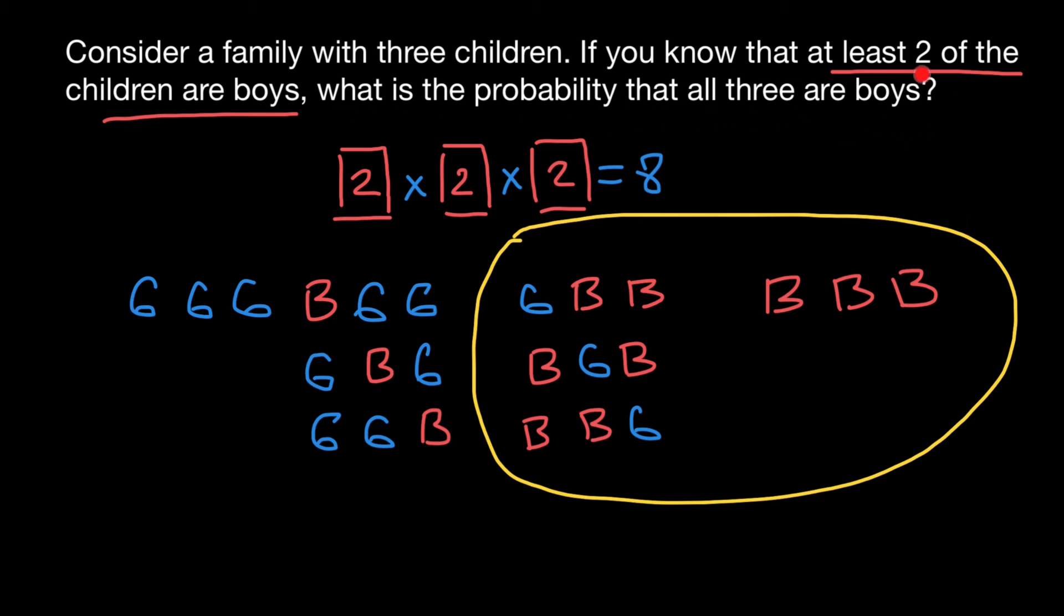And the probability again: what is the probability that all three are boys? This group is going to be three boys out of four combinations. So our answer is going to be one out of four, or one quarter, or 25%, or 0.25. Three different answers but means the same answer.